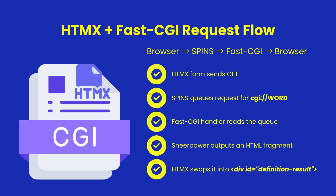Let's walk through the request flow. First, the user types a word into the HTML form. htmx converts the submit action into a GET request sent to Spins. Spins routes it to the FastCGI queue for the handler named 'word'. Your Shear Power program reads the word, looks it up in the cluster, generates an HTML fragment, and sends it back. htmx receives the snippet and inserts it directly into the definition panel — no full page reload, no JS glue code.